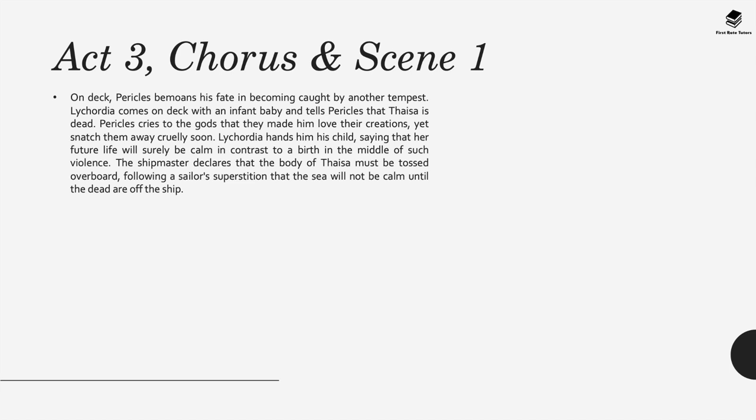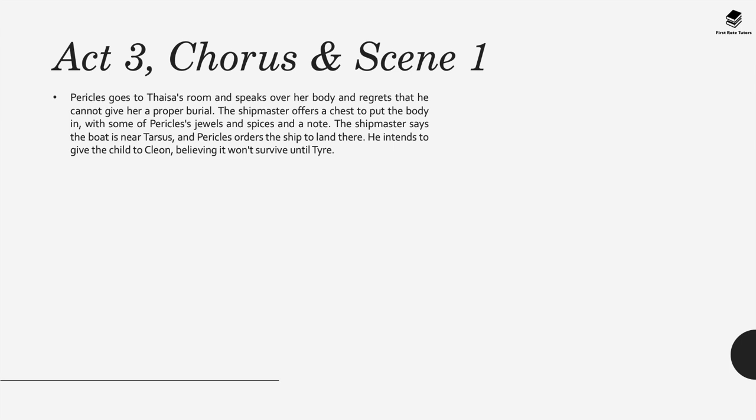Lycordia hands Pericles his child, saying her future life will surely be calm in contrast to such a violent birth. The shipmaster declares that Thaisa's body must be tossed overboard, following the sailor's superstition that the sea will not be calm until the dead are off the ship. Pericles goes to Thaisa's room and speaks over her body, regretting he cannot give her a proper burial. The shipmaster offers a chest to put the body in, with some of Pericles's jewels, spices, and a note. The boat is near Tarsus, so Pericles orders it to land there and intends to leave the child with Cleon, believing it will not survive until Tyre.